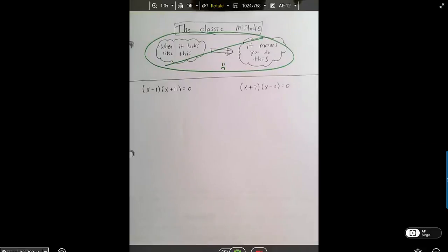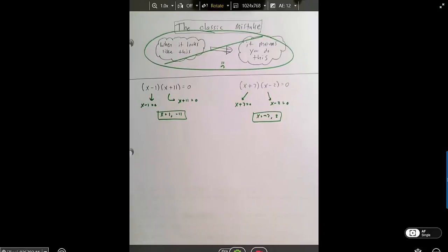Here's what the classic mistake might look like in Algebra 2. You're learning about this kind of thing, and the teacher solves them. They show you some examples, and those examples look like this. And you spot a pattern. You say, my god, when it looks like this, I just do this.